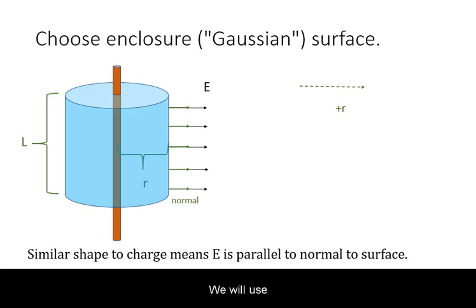We will use an enclosing surface that is cylindrical in shape as to ensure that the electric field will be parallel to the normal vector to the surface.